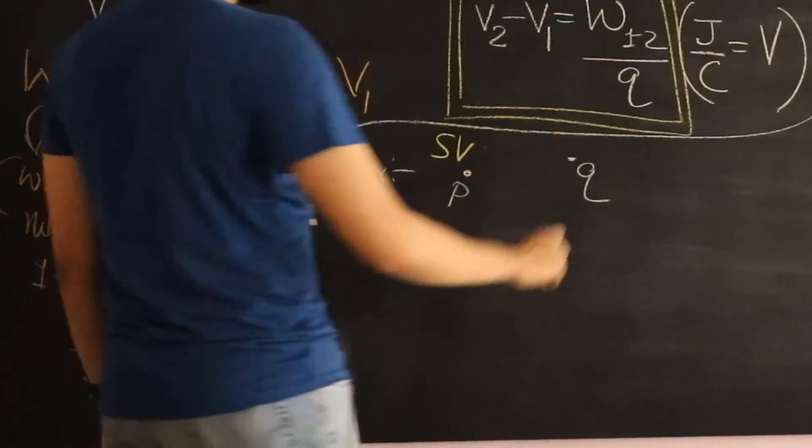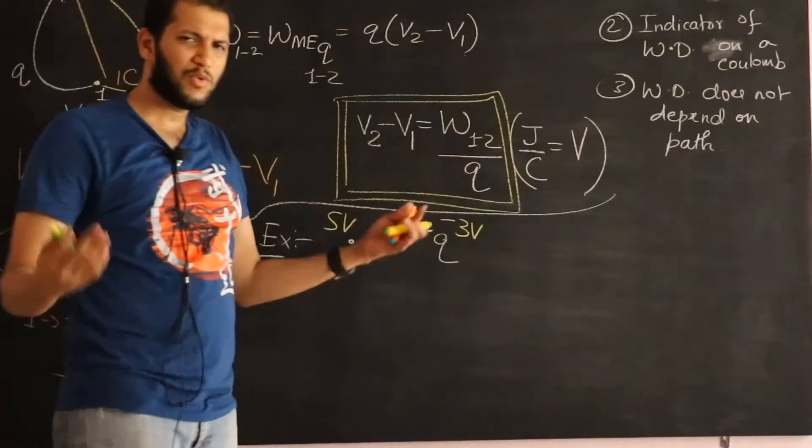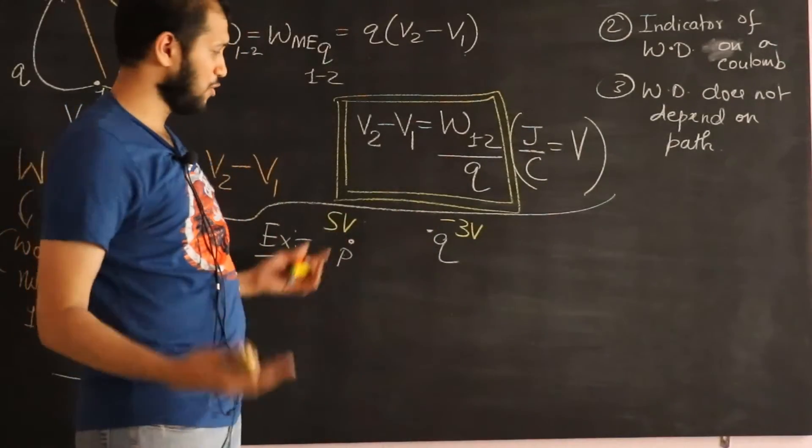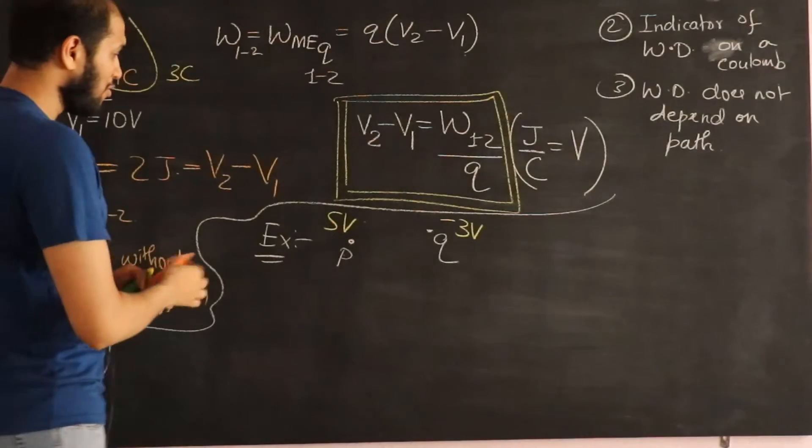And let's say point Q has a potential of minus 3 volts. I mean voltage. We can put negative signs. No big deal. Minus 3 volts. And suppose I move, let's say minus 2 coulombs this way.